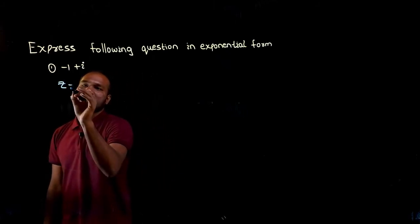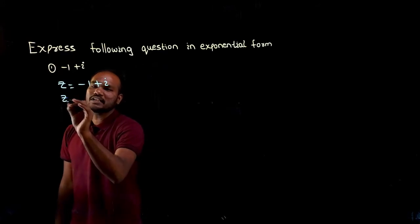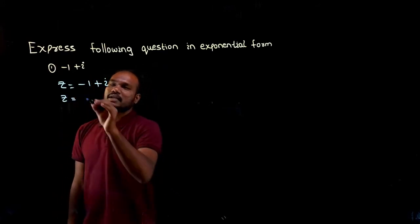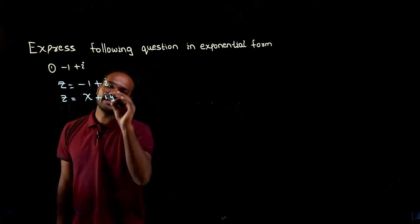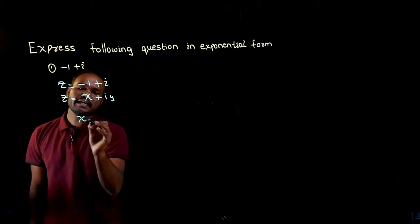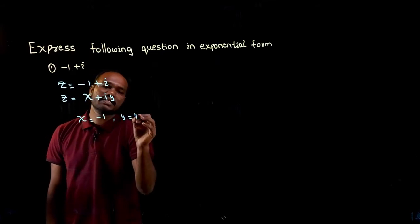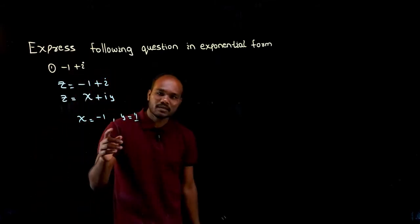So the given question is, if I take the given question as -1 + i, we have to compare this with the standard form. What is standard form? x + iy. So this is the standard form. This is the given question. So if I compare, I get the x value as -1, y value as i coefficient, that is 1. X is -1, Y is 1.